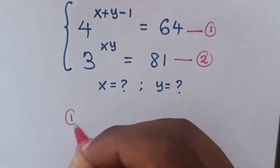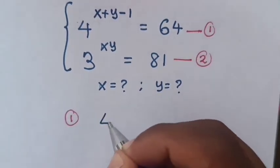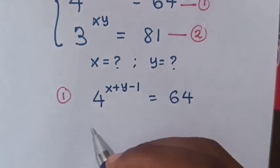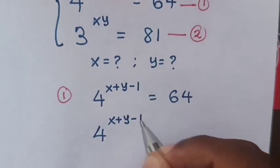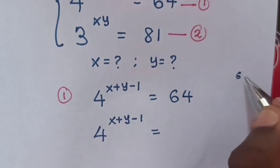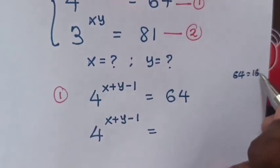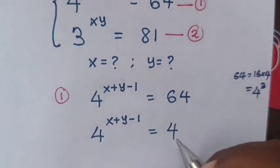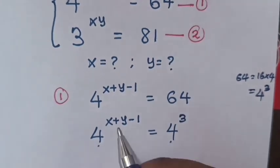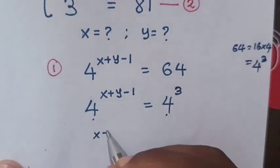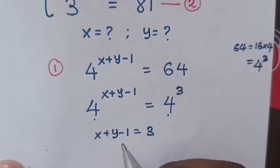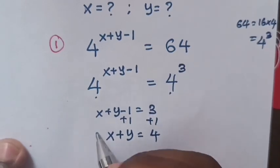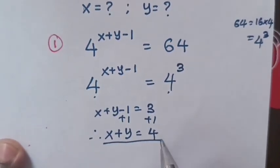Step 1: From equation 1, which is 4 to the power of (x plus y minus 1) equals 64. We know that 64 is the same as 4 times 4 times 4, which is 4 to the power of 3. Since we have the same base with different powers, we compare the powers: x plus y minus 1 equals 3. Adding 1 to both sides, we get x plus y equals 4.